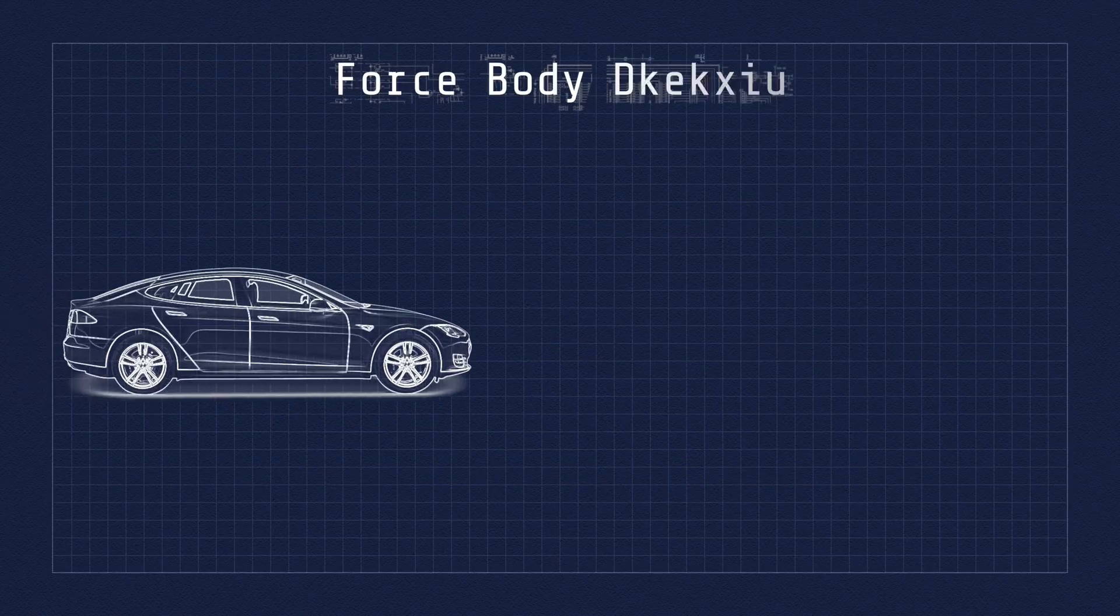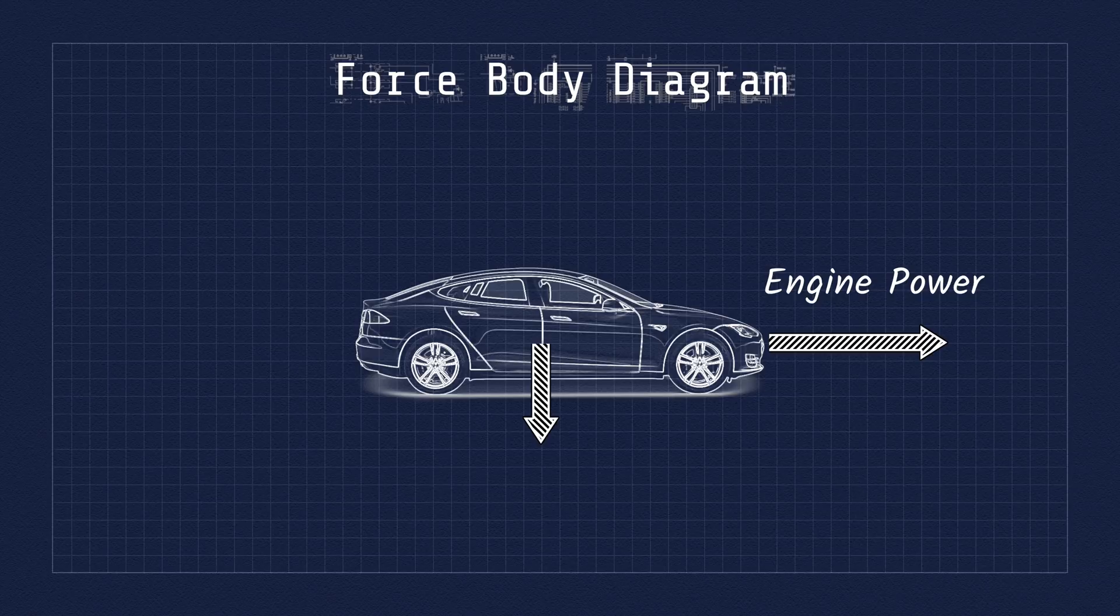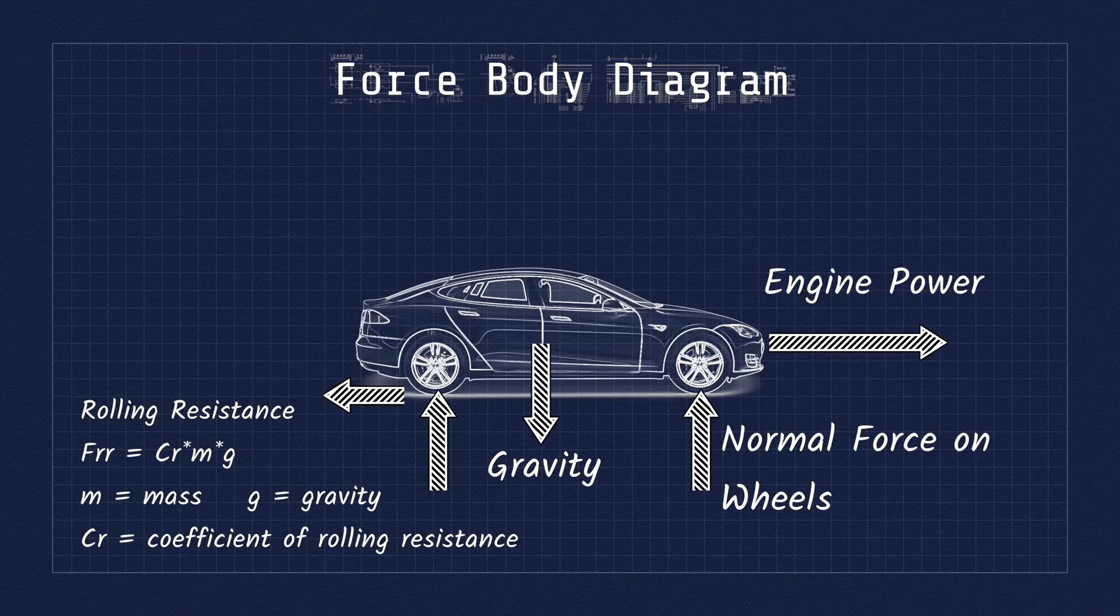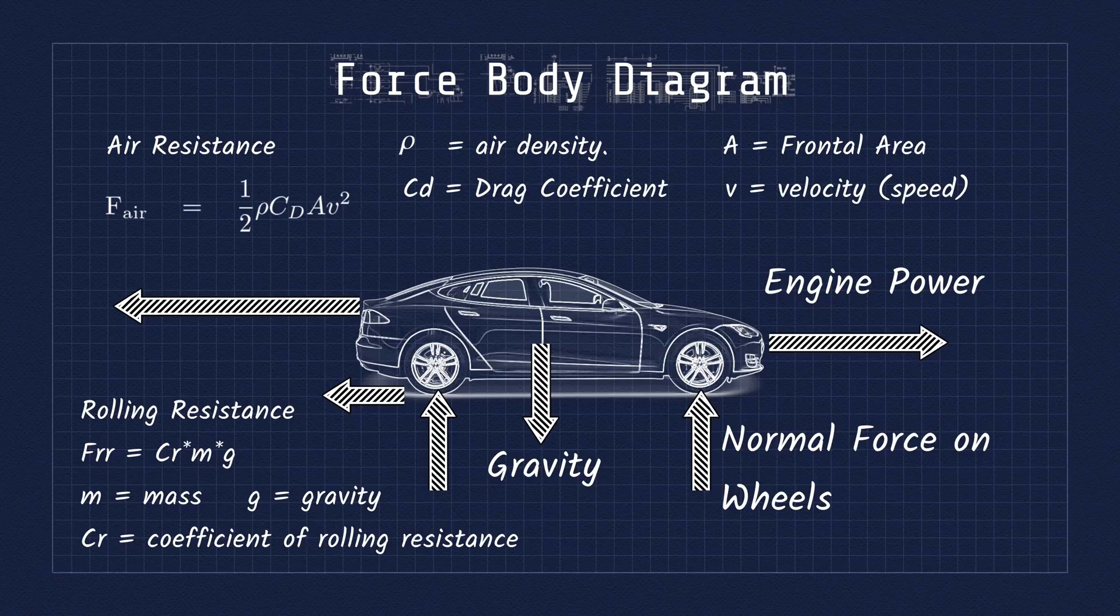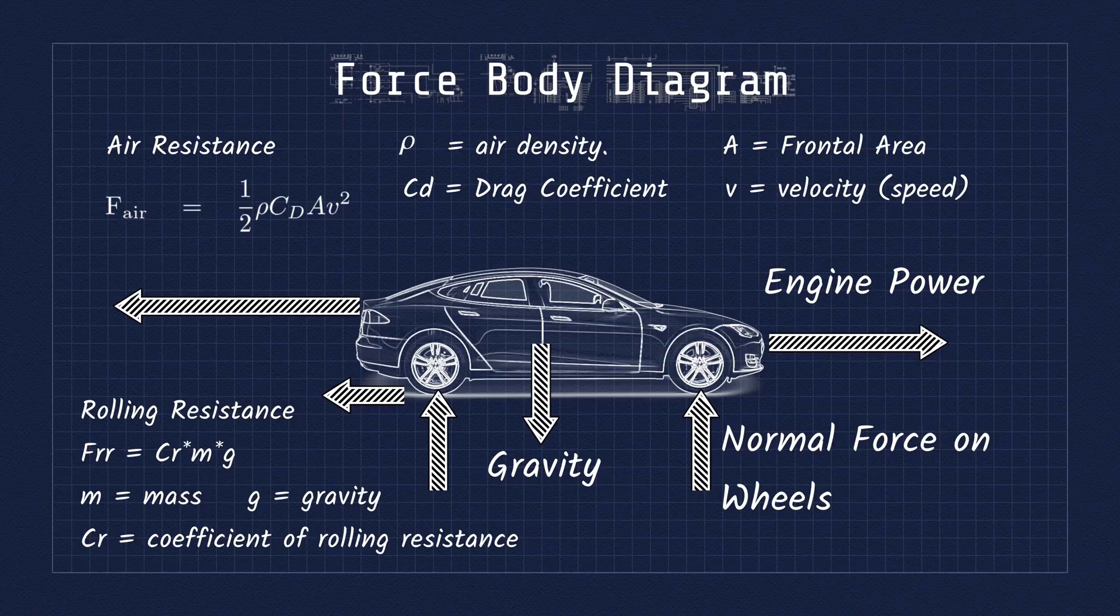If we look at a force body diagram, we have the engine or motor providing a forward force, and we have two forces acting against the car, the rolling resistance and the air drag. When these two forces are equal and opposite to the maximum force provided by the engine or motor, the car has reached its maximum speed.